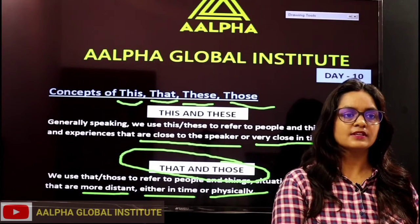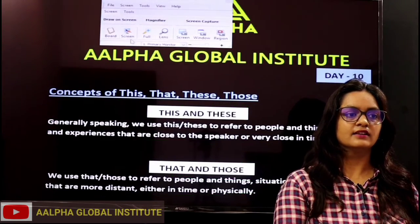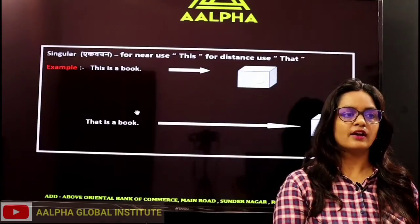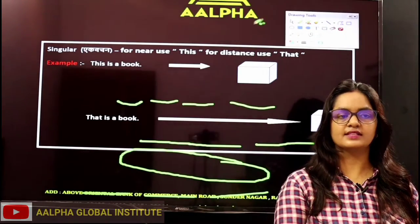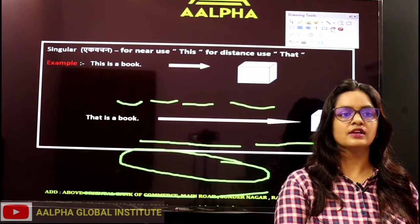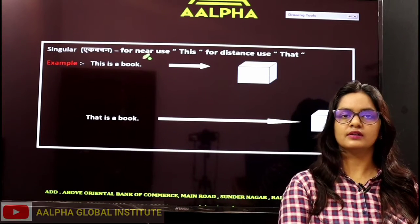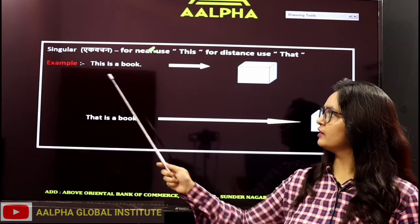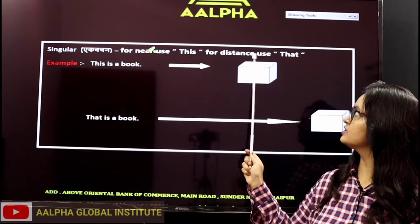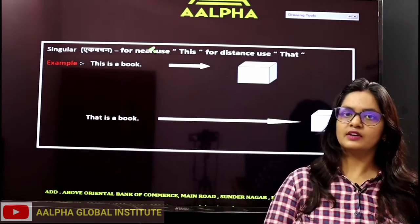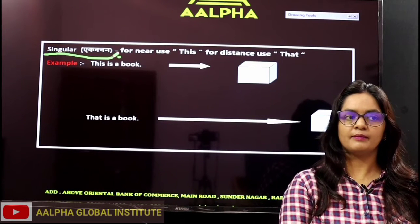Now let's look at some more examples. On the next slide, we have examples for singular. For singular — for something near, use 'this'; for something at a distance, use 'that.' So for singular, we will use either 'this' or 'that' depending on how close the object is.